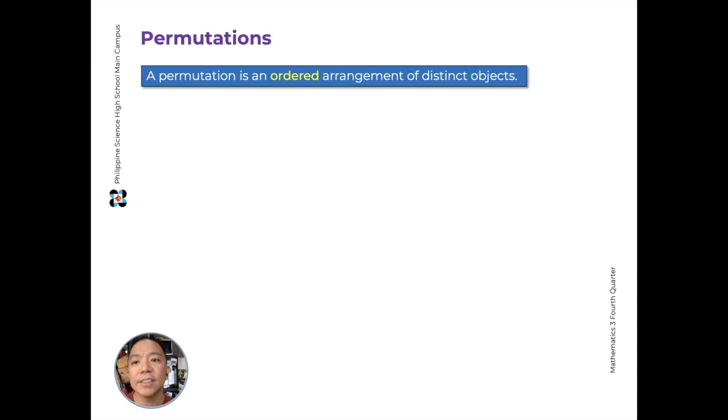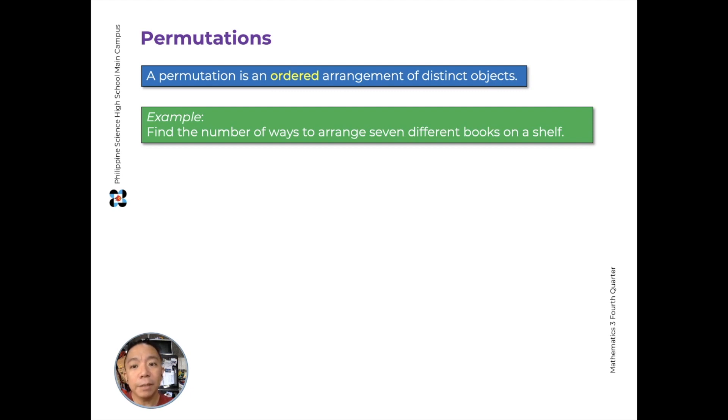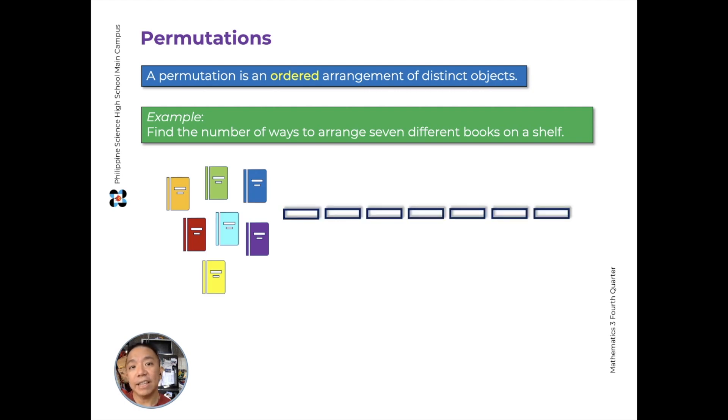Now let's define what a permutation is. We have an idea from earlier, but formally, a permutation is an ordered arrangement of distinct objects. So the arrangement and order are important. For example, I have 7 different books. I want to find the number of ways to arrange my 7 different books on a shelf with 7 spaces or 7 places for my books. The way we'll look at this is, for the first spot, how many books can I put? I have 7 possibilities of books I can put there.